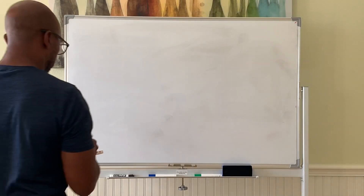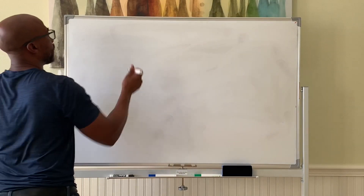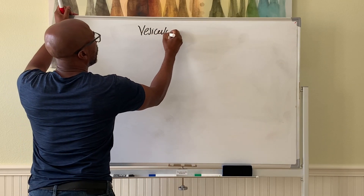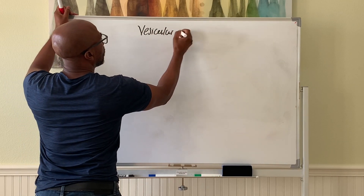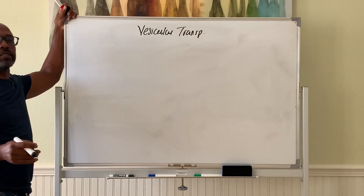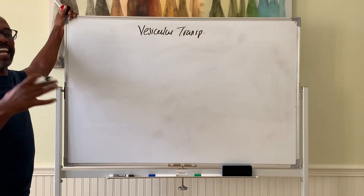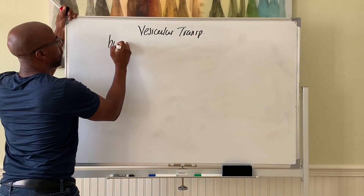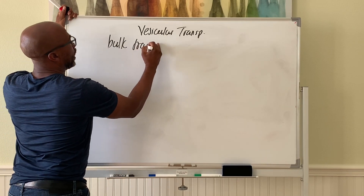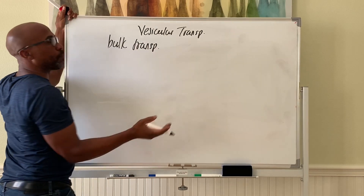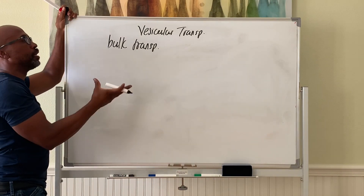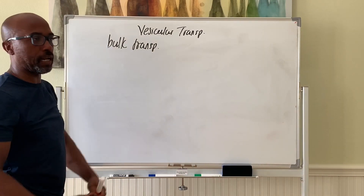Let's look at vesicular transport. In this case, you're transporting things in bulk — it's like a bulk transport technique. Before, carriers can only bind one or two things at a time. Here you can just bring things in bulk across the cell membrane.